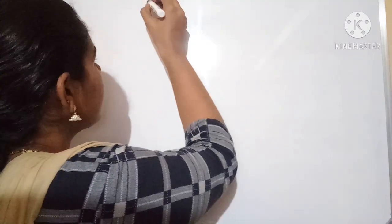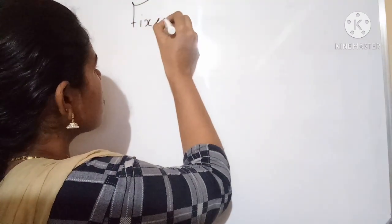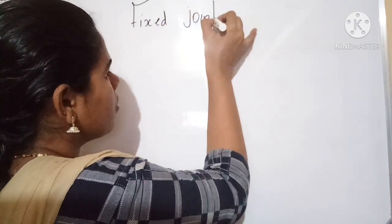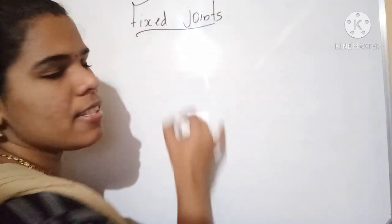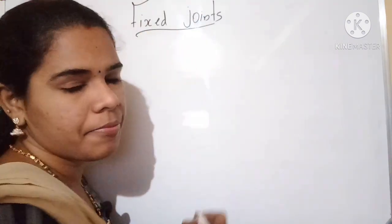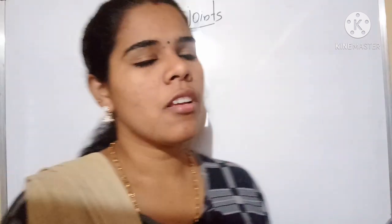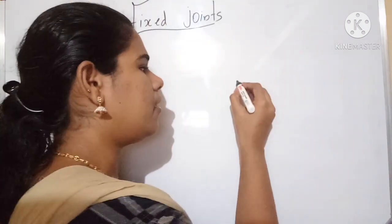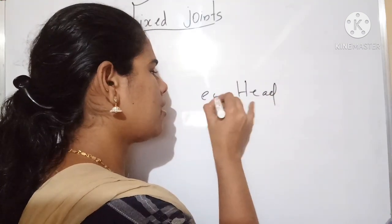Hi everyone, last class we discussed about different types of joints. Today we discuss about the last one: fixed joints. Another type of joint called fixed joints — it's very simple, the name also indicates the nature of that joint. Fixed means not movable, okay, it's a not-movable joint. Example: the head or skull.